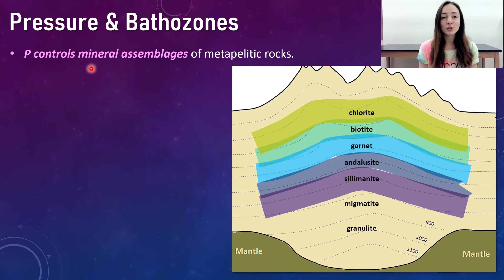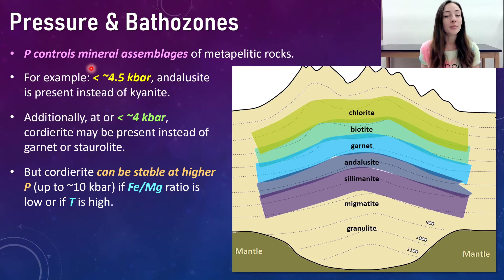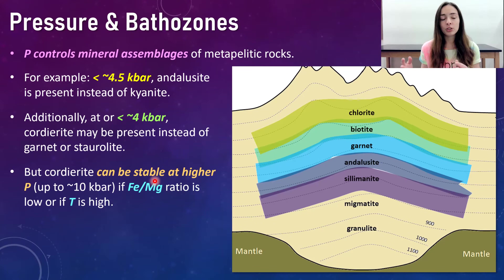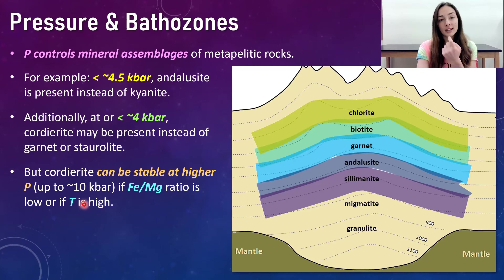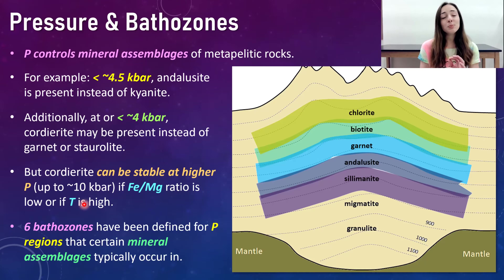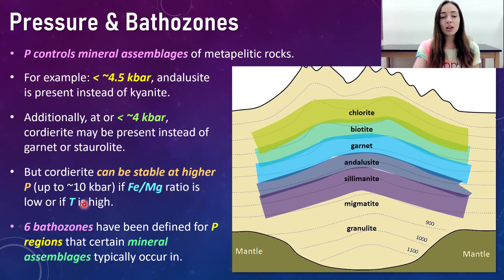Pressure seems to heavily control mineralogical assemblages in meta-pelitic rocks. For example, at less than 4.5 kilobars, andalusite — the third polymorph of kyanite and sillimanite — is present instead of kyanite or sillimanite. At less than 4 kilobars, cordierite may be present instead of garnet or staurolite. Bulk chemical composition and temperature also play a role. Because pressure plays such an integral role, six Barrow zones or pressure regions have been defined for certain mineral assemblages.